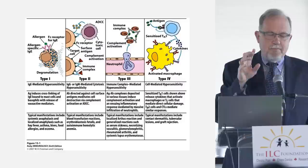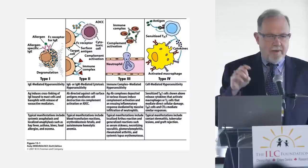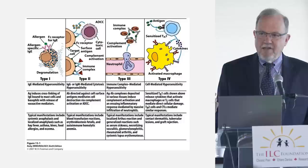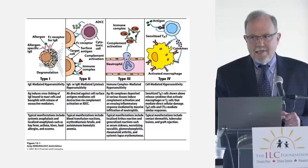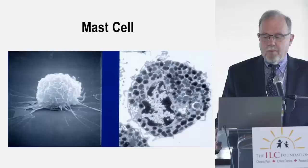Why does that matter? It matters because there are only specific things that can happen when mast cells are activated. When you step on the gas in your car, it can only rev the engine — it can't do anything else. When mast cells are activated, they only have certain things they can elicit by way of clinical symptoms within the body. People often come in and say they've got symptoms A, B, C, and D, and are disappointed to find that's not related to mast cell activation because that's not what mast cells do. So it's important to understand what the mast cells look like functionally, what's inside them, and what those chemicals can elicit within the body.